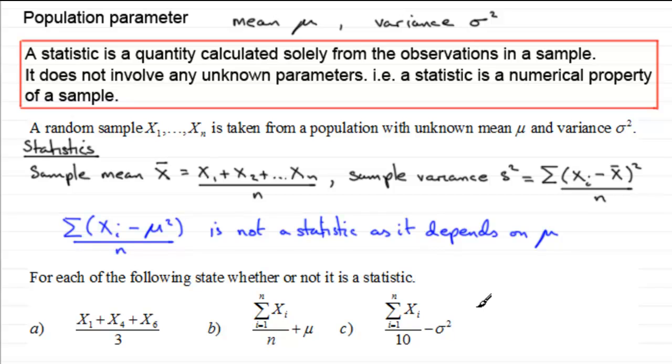Okay. How did you get on? Well, the first one, where we add the first observation, the fourth observation, and the sixth observation in our sample, divided by three, and that doesn't depend on μ or σ. So this is a statistic.